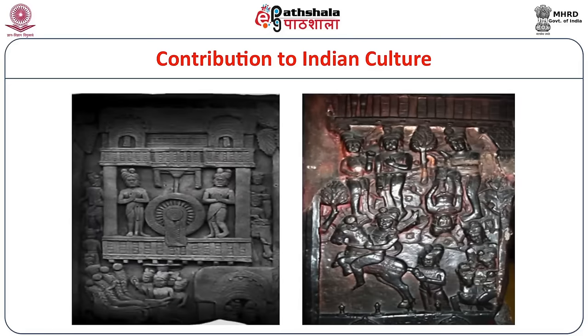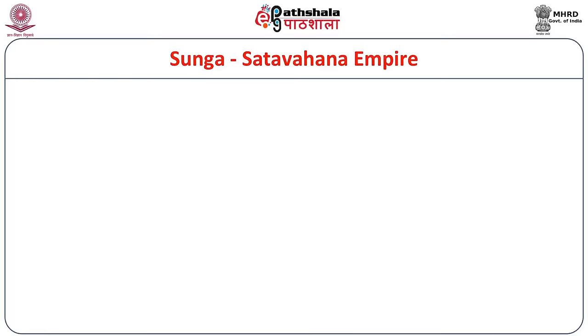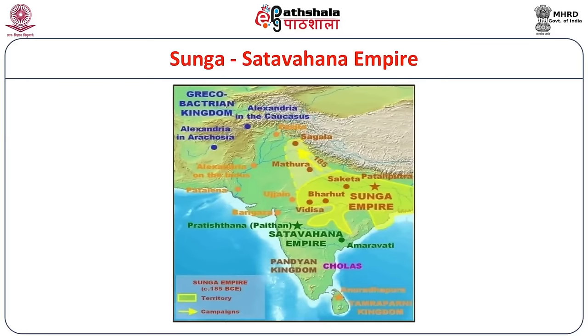See the grandeur of Buddhist sculptures at Barhut and Sanchi. The Sungas ruled over North Western India around Pataliputra, and the Shatavahanas ruled over the Deccan with Pratishtanapura. See the map of their location and territorial limits.